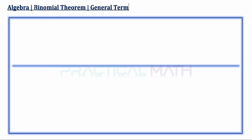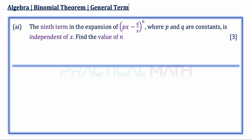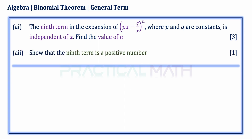Hi, in this video we'll be discussing a question on binomial theorem and its general term. In Part A1, the ninth term in the expansion of (px - q/x) to the power of n, where p and q are constants, is independent of x. Find the value of n — that's a 3-mark question. In Part A2, show that the ninth term is a positive number — that's a 1-mark question.